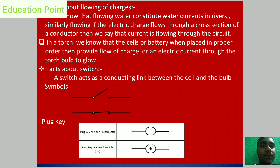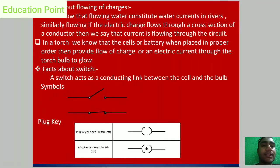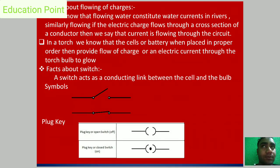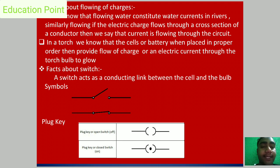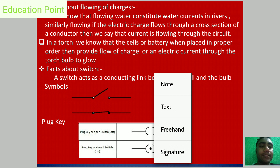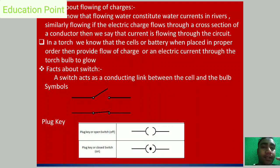It has practical advantages as well. In the case of a torch, the cells or the battery, when placed in proper order, provide the flow of charges — an electric current — to the torch bulb, which causes the bulb to glow. In the case of the torch, there is an instrument called the switch. A switch acts as a conducting link between the cell and the bulb.